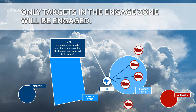Detection is very much dependent on the visibility of the AI — the height at which it is flying — and also whether there are any blocking objects between the AI and the ground targets.